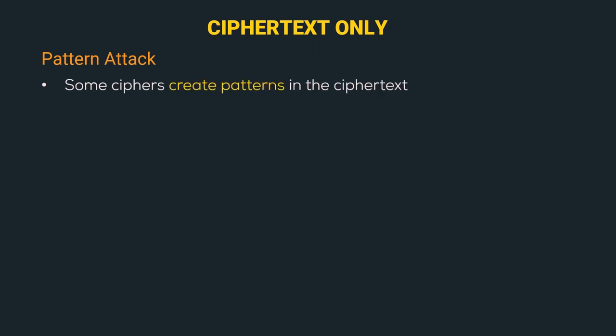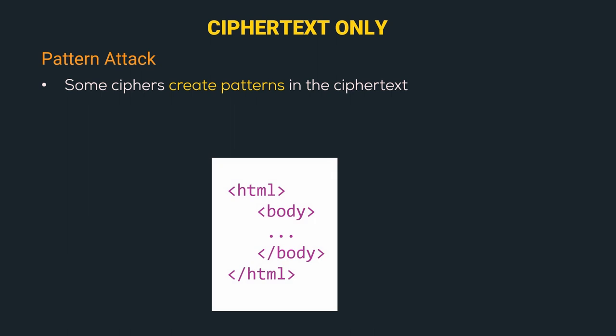Another method is the pattern attack. Some ciphers create patterns in the ciphertext. For example, in an HTML code, everything is surrounded by a tag, and when such a pattern is converted to ciphertext, we get a similar pattern in the ciphertext. Cryptanalysts use this pattern to break the cipher, as they know an HTML code is always surrounded by an HTML tag. Once that tag is decrypted, the whole code can be decrypted using the same logic. That was all about ciphertext only attack.